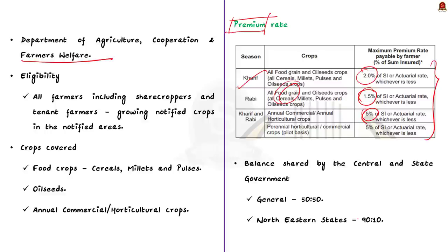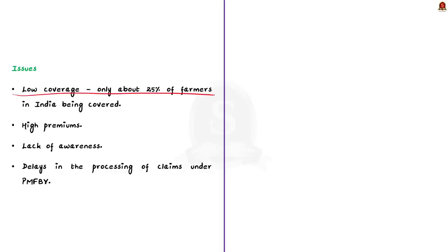Even though the scheme helps farmers in many ways, there are some issues in reality. The scheme has been criticized for its low coverage, with only about 25% of farmers in India being covered. The premiums are said to be high and many farmers cannot afford them. Many farmers are also not aware of the scheme or do not understand how it works. There have also been reports of delays in processing claims under PMFBY, causing financial hardship for farmers. The government has taken steps to address these issues, including increasing coverage, reducing premiums, and developing a National Crop Insurance Portal for better implementation.